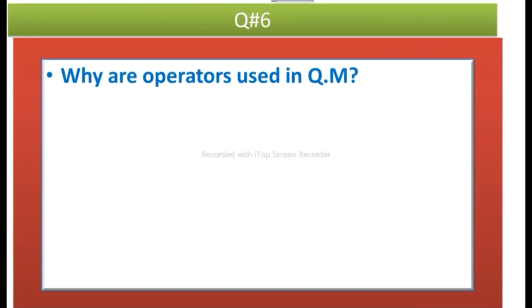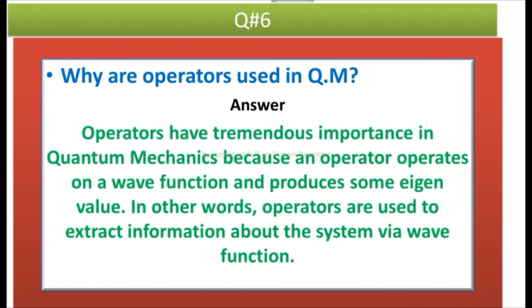Question number six: Why are operators used in quantum mechanics? Answer: Operators have tremendous importance in quantum mechanics because an operator operates on a wave function and produces some eigenvalue. In other words, operators are used to extract information about the system via wave function.